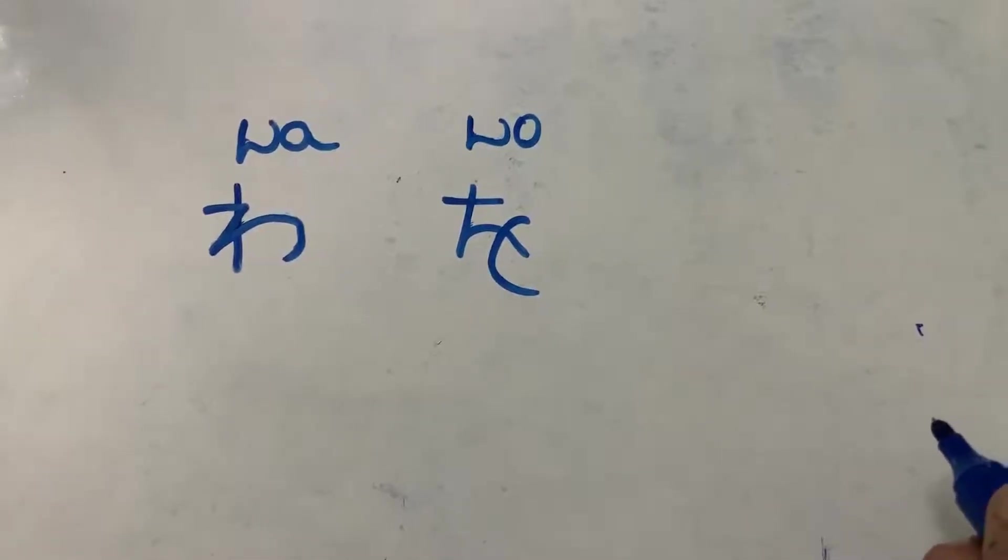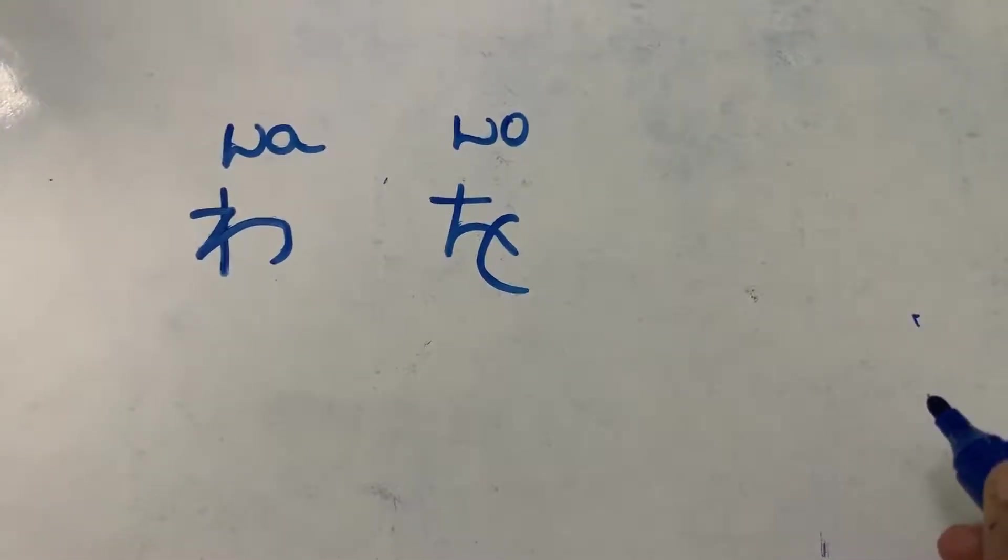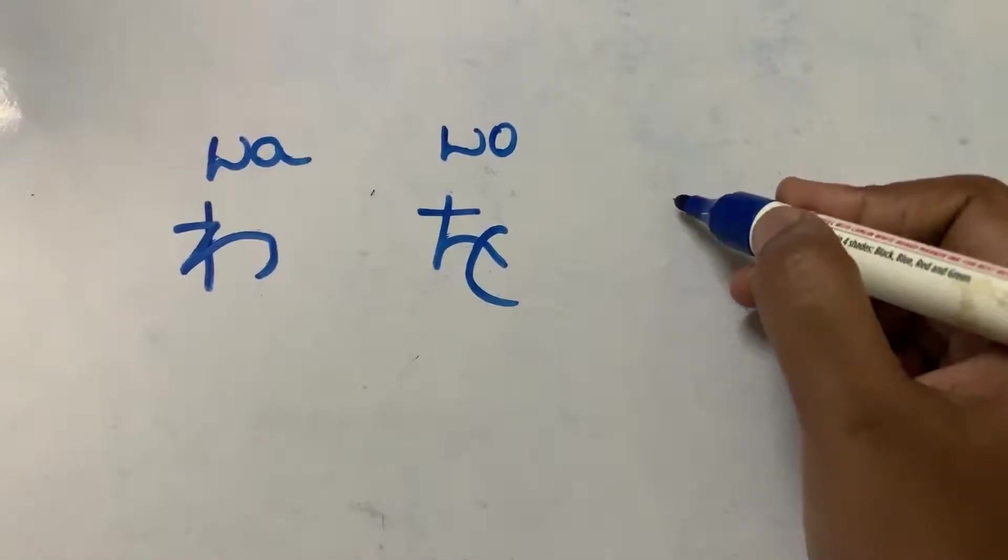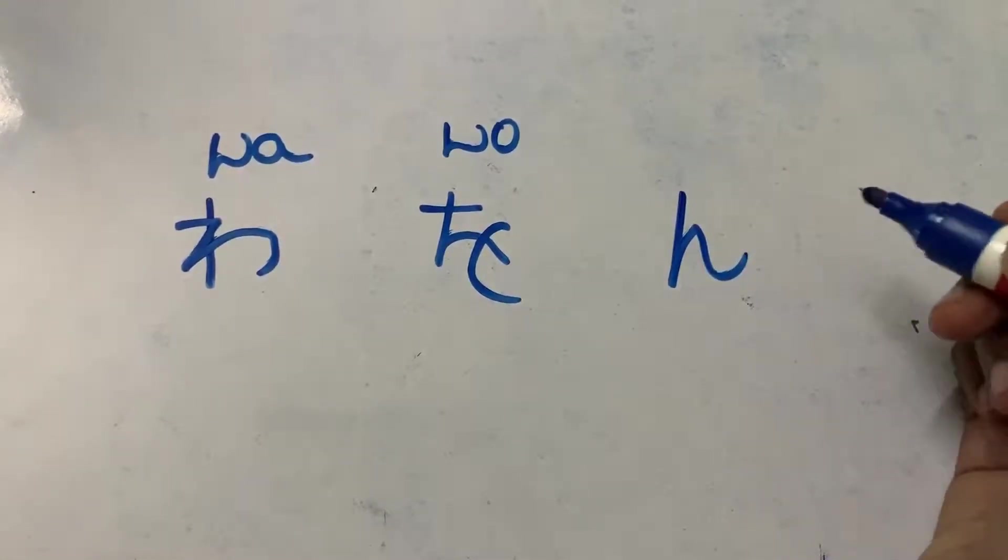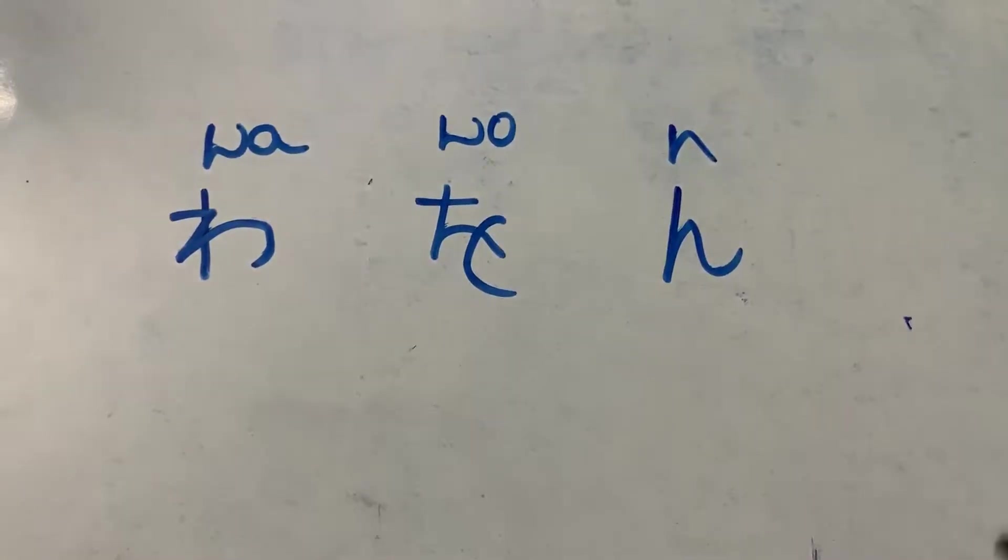Let's see the very special consonant in hiragana that is n. So this we call it as n.